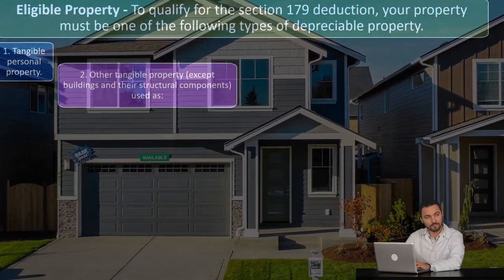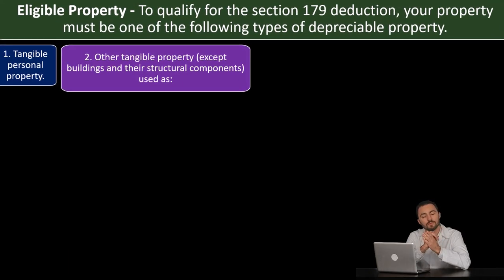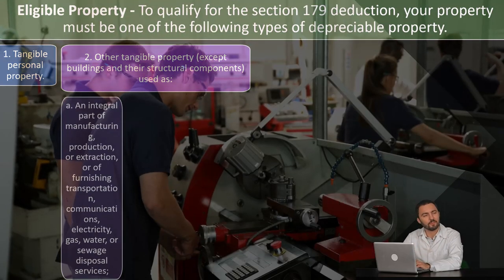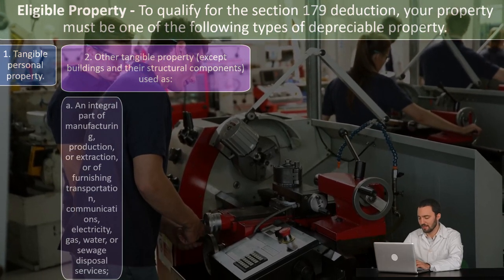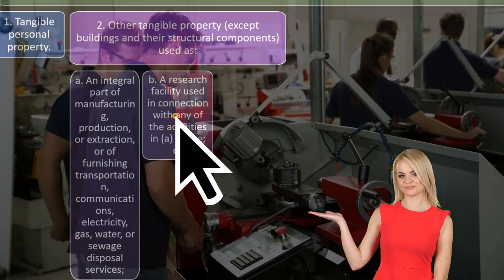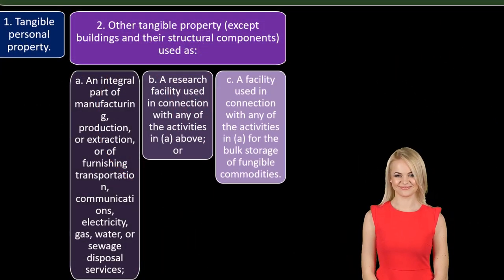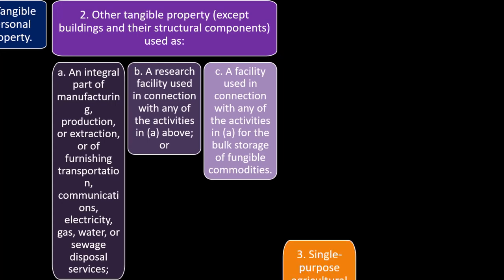Number one: tangible personal property. Number two: other tangible property, except buildings and their structural components, used as (A) an integral part of manufacturing, production, or extraction, or of furnishing transportation, communications, electricity, gas, water, or sewage disposal services; (B) a research facility used in connection with any of the activities in A; or (C) a facility used in connection with any of the activities in A for bulk storage of fungible commodities.